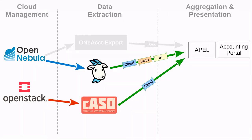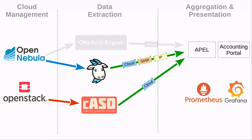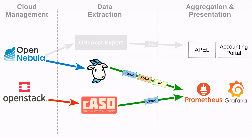Another problem we were facing was APEL, which was not at the time yet supporting all the required accounting record types. To be able to use GOAT and experiment with the new tool, we decided to introduce a new aggregation and presentation setup, which is based on Prometheus and Grafana. We learned to redirect the output from the data extraction tools to Prometheus and to visualize it either directly in Prometheus or in Grafana.